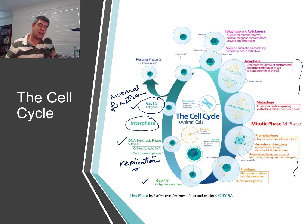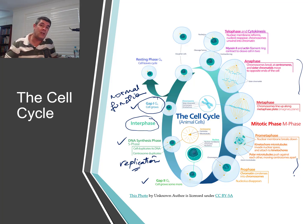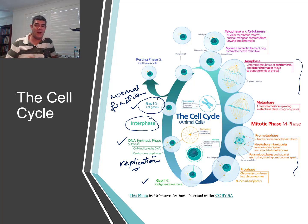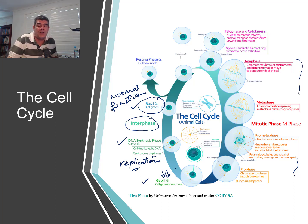After replication occurs, there's a G2 phase in which there's a bit of preparation — proofing of the coding and production of important proteins that are going to act as enzymes involved in the process of mitosis. All of that is happening at the G2 stage. Following that, we get into the actual process of mitosis, the cell division part.